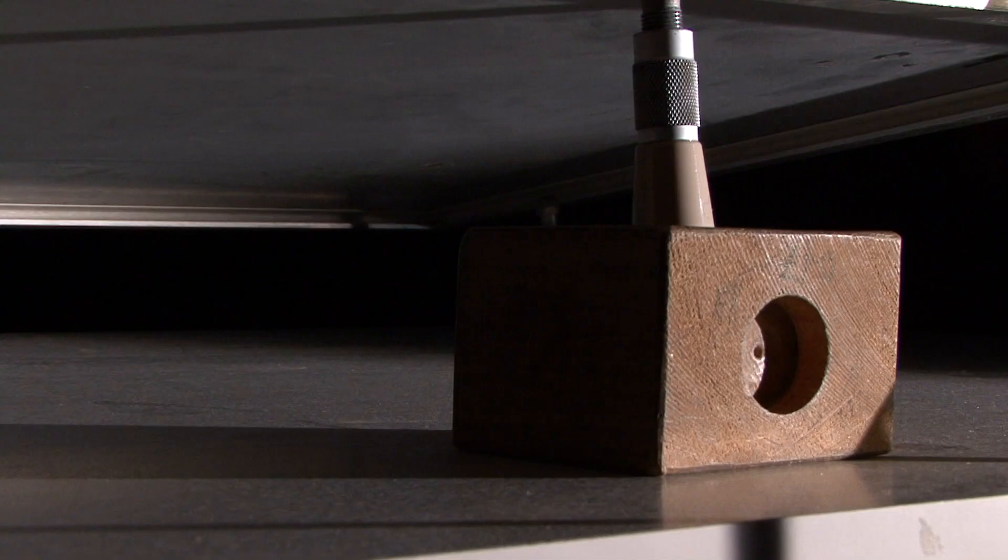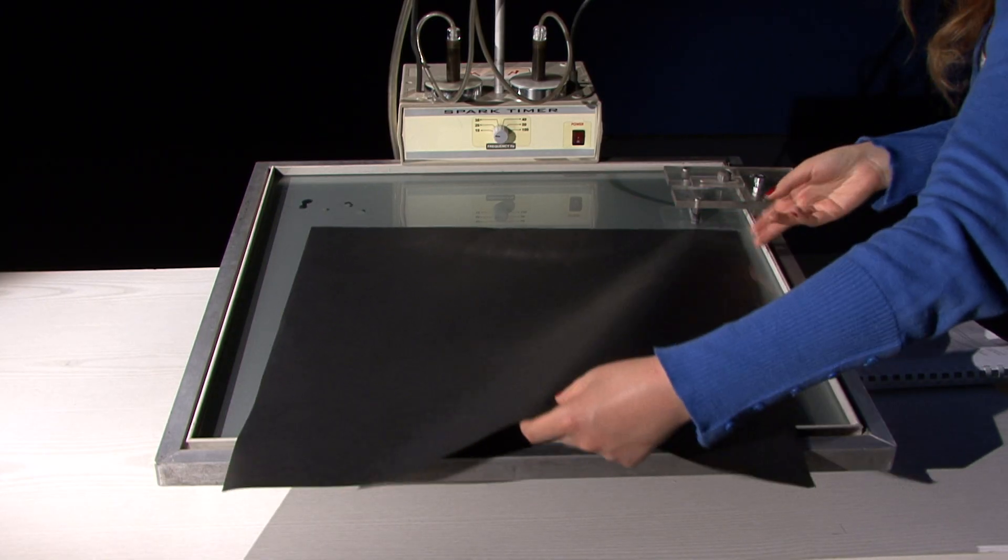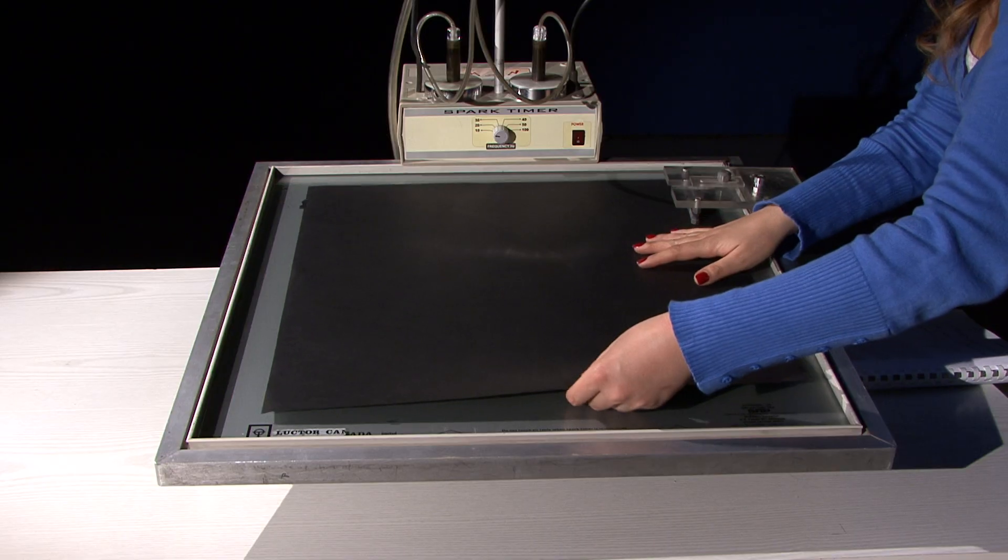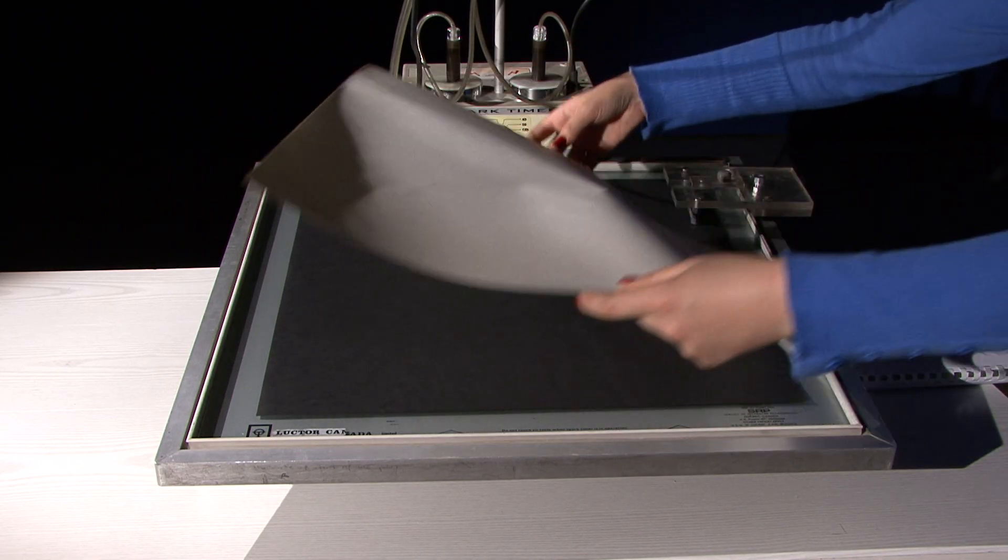Incline the air table by using a wooden block. Place the carbon paper on the air table. Place your datasheet on the carbon paper.